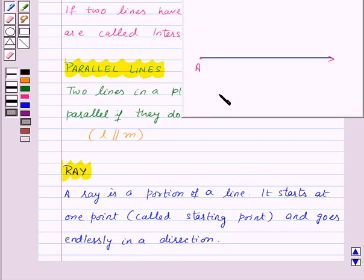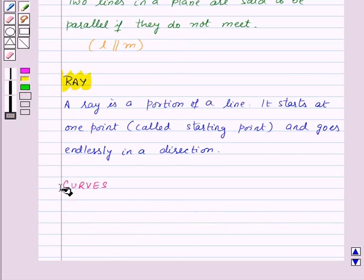For example, this is a ray. This starts at the point A. This is called the starting point and goes endlessly in this direction. Suppose we mark a point B over here. Then this ray is denoted by ray AV. Now let us move on to curves.